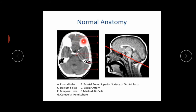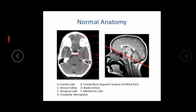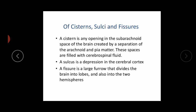On the next cut, we can see the frontal lobe and the frontal bone, which is hyperdense. Then the dorsum sellae, and the basilar artery is visible here. This is the temporal lobe. We can also see the mastoid air cells, the cerebral hemisphere, cisterns, sulci, and fissures.